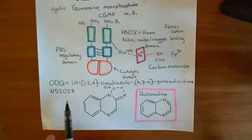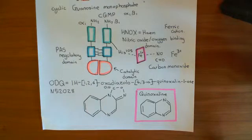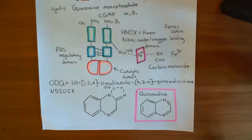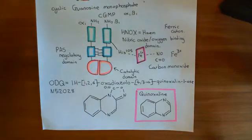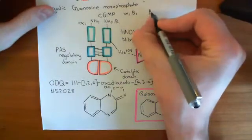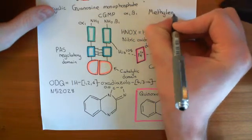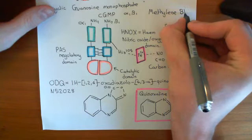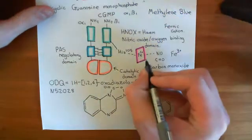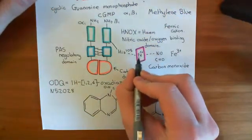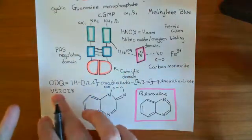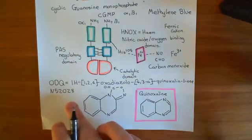So NS2028 is believed to act in a very similar way to ODQ. The next pharmacological agent which can be used to inhibit soluble guanylate cyclase enzymes is methylene blue. Methylene blue is not believed to directly inhibit the heme group in the same way as ODQ and NS2028.